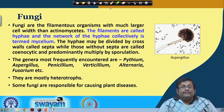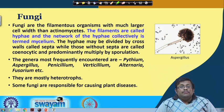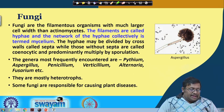Some important genera frequently found in soils are Pythium, Aspergillus, Penicillium, Verticillium, Alternaria, and Fusarium. They are mostly heterotrophs and grow within dead organic matter — they thrive on it. Some fungi are also responsible for causing plant diseases.